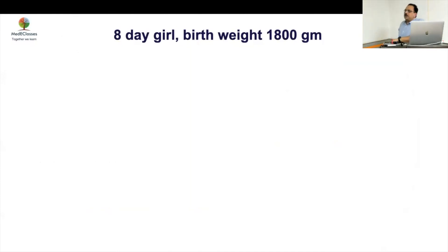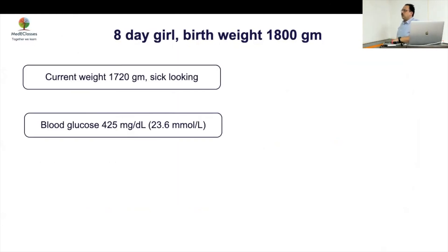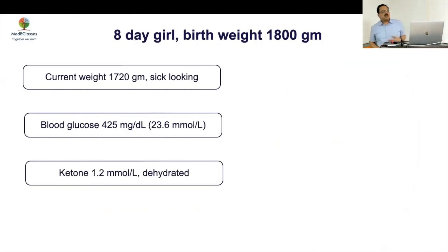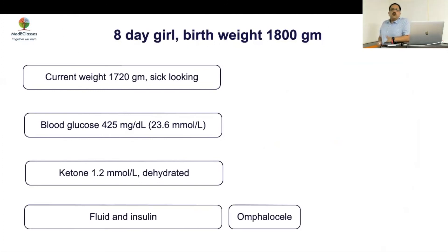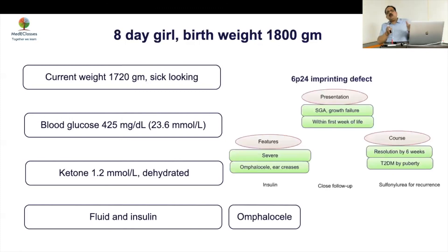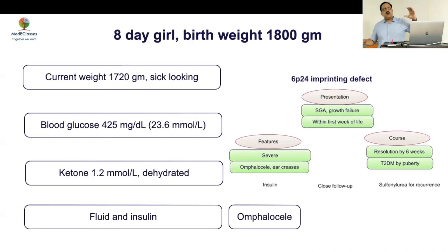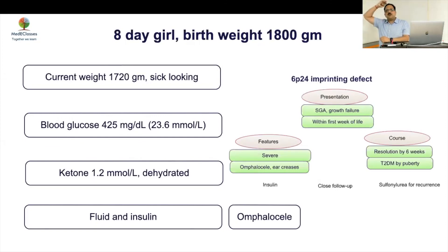Case 6: an eight-day-old girl with birth weight 1800 grams presented looking sick — sugar of 425, high ketones, positive DKA, and dehydrated. She also had an omphalocele. Very early onset with severe DKA is most likely a PLAGL1 defect, an imprinting problem — likely transient neonatal diabetes. Later onset without DKA is more likely to be potassium ATP channel defect. If very severe, it tends to improve and then recur after a few years; if mild K-ATP channel defect, it may be transient but return in three to four years. Severe K-ATP defects are permanent and respond dramatically to sulfonylurea.